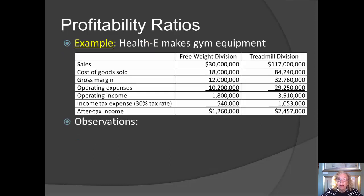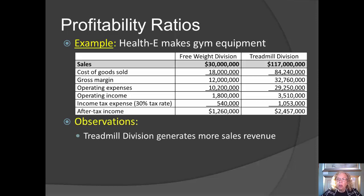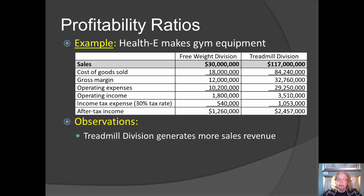Let's look at an example. We have a company, Health E, that makes gym equipment. They manufacture free weights in one division and treadmills in another division. If we're not using ratio analysis, we would simply look at how successful each division has been at its goal of generating income. The treadmill division has been much better at generating sales, and it has also been more successful at generating gross margin, operating income, and after-tax income.